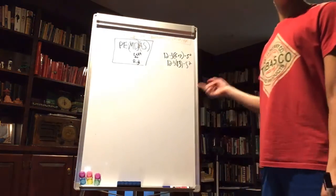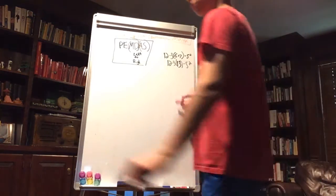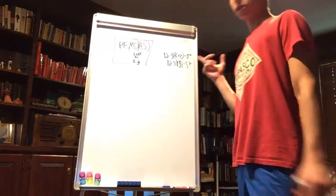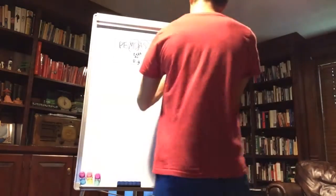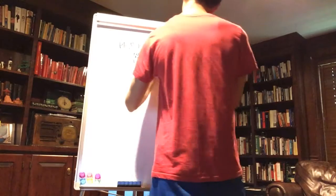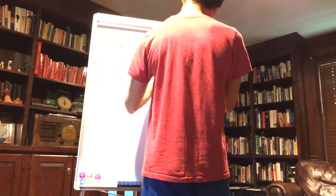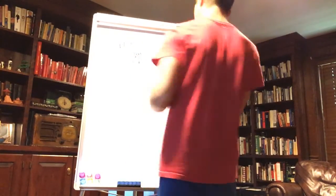Now we don't have any parentheses left. So what you're going to be doing is exponents. 5 squared is 25. And then, 12 minus 3 times 13 minus 25.